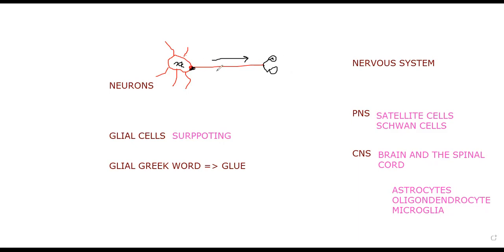The axon propagates or transmits electrical impulses. When the dendrites sense information, it is propagated along the axon to the terminal bouton. Importantly, the axon can have myelin sheaths — these are a coating made up of fats and proteins.